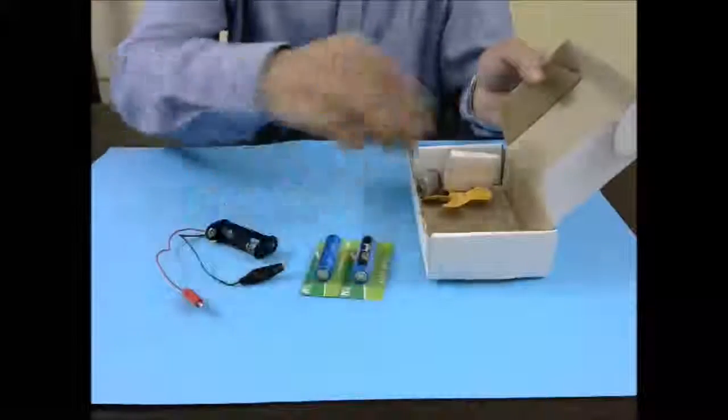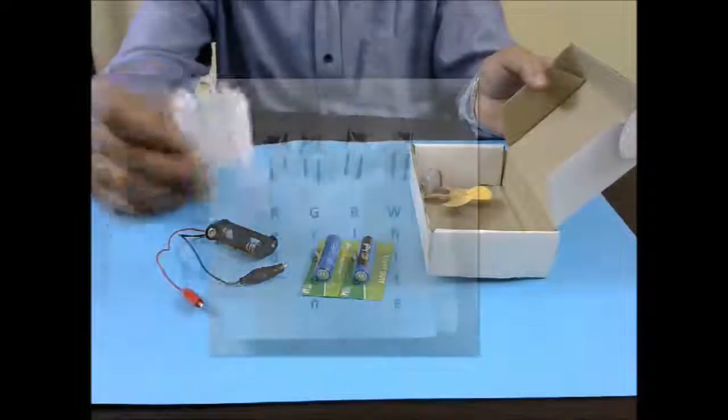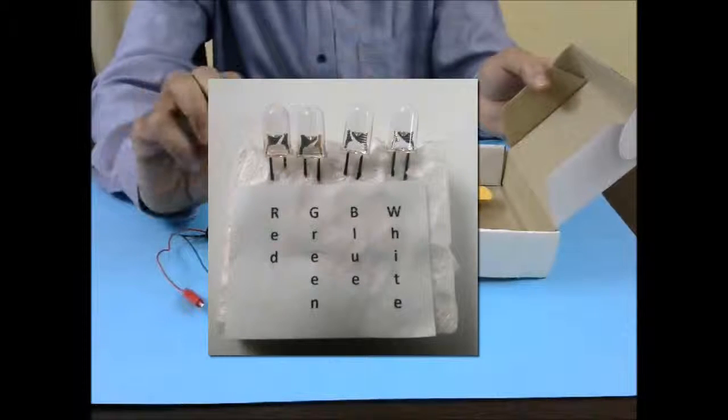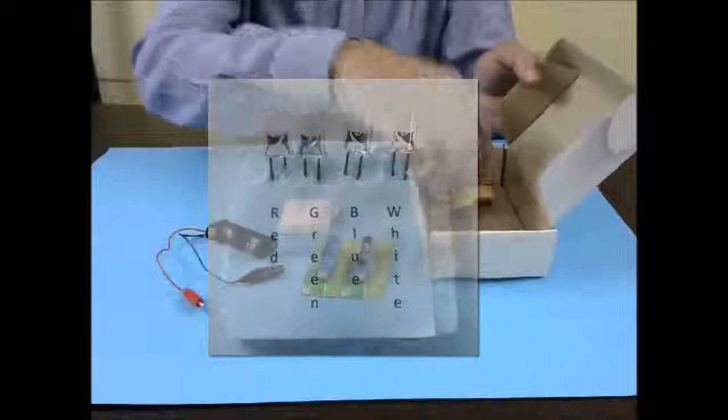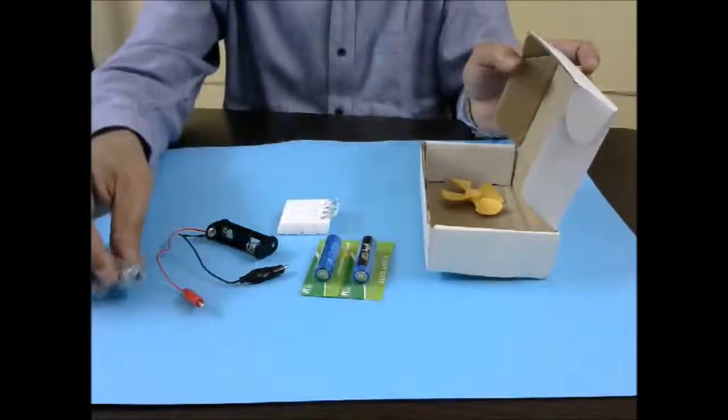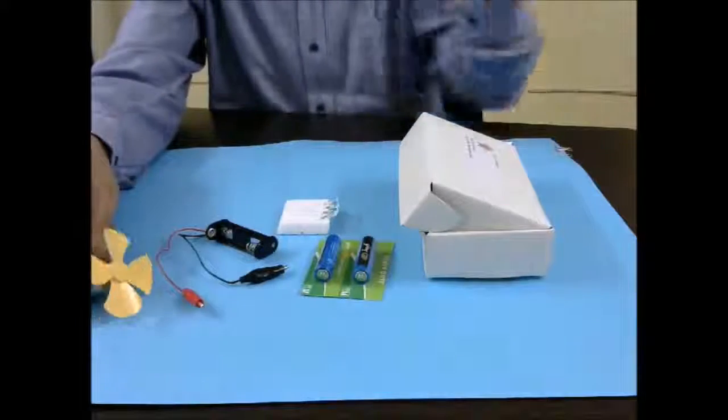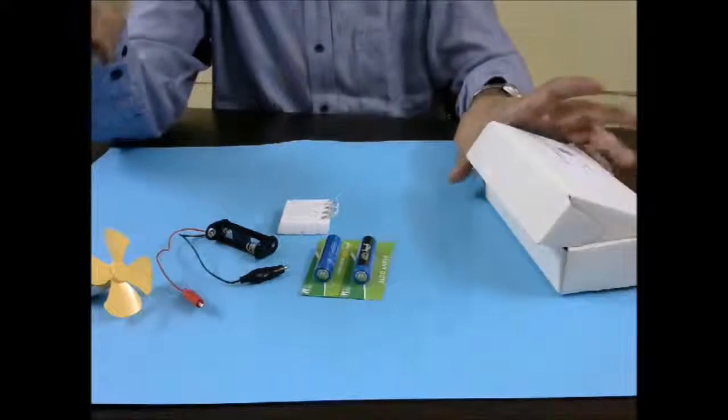We have two batteries. We have four LED bulbs and these are of different color. They're red, green, blue and white. We have one motor for you to have fun and then a fan which connects on the motor so that you can see it running. So let's see how this thing works.